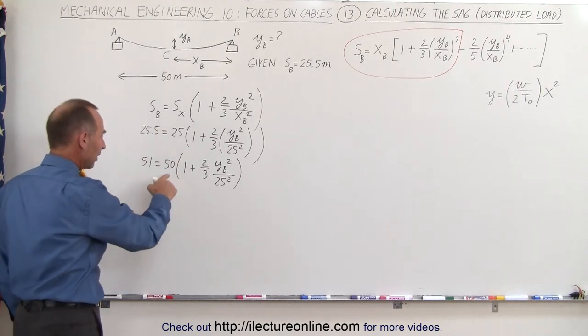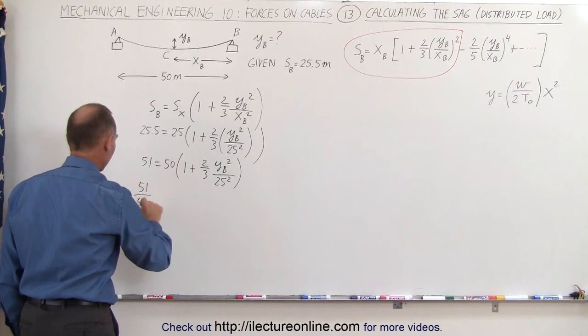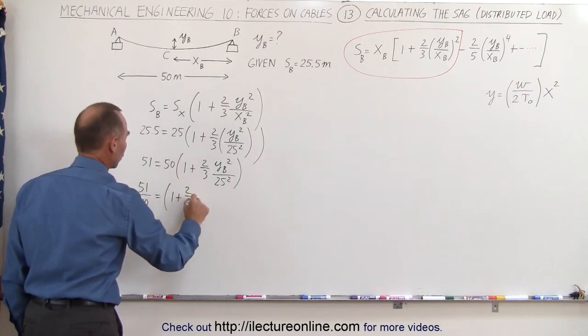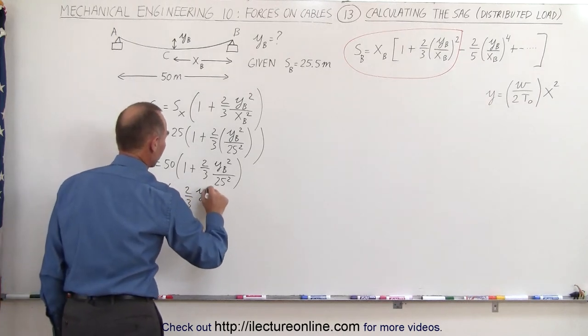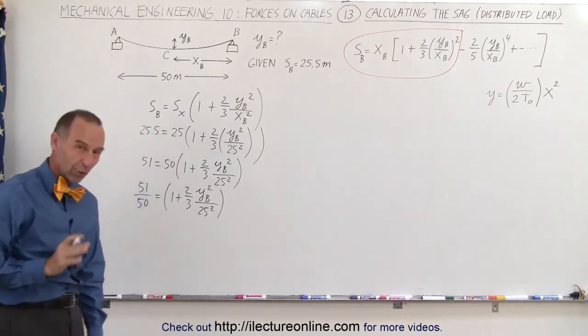First, to simplify this, we'll divide both sides by 50, we get 51 divided by 50 equals one plus two-thirds times Y sub B squared over 25 squared. And I think you begin to see where this is going.